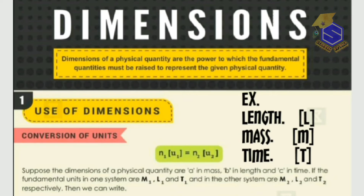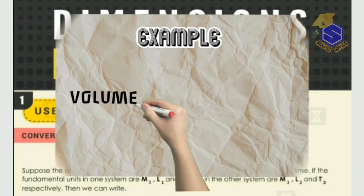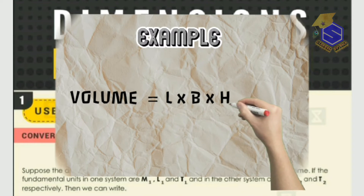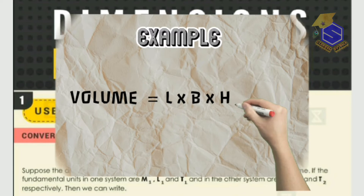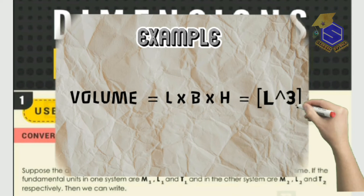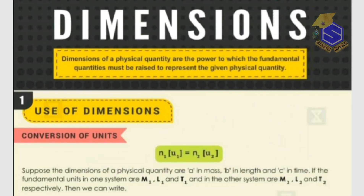Fundamental quantities could be length, mass, time, temperature, etc. Their powers describe a derived quantity. For example, take volume. The formula of volume is length into breadth into height. Length is a fundamental quantity, breadth is also length, and height is also length. So volume can be written as length to the power 3 — that is, length cubed. Here, length cubed is the dimension of the physical quantity volume.